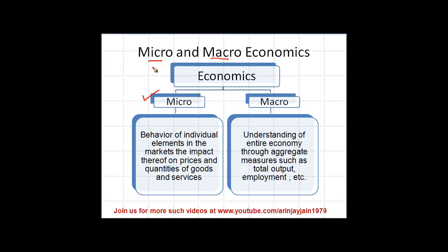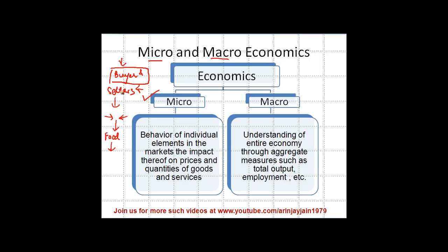Let's see first microeconomics. In a market there are buyers and sellers. When I study each individual buyer and seller and how they are interacting with each other, and how that is going to affect a particular commodity — say food — I am studying the interaction of various buyers and various sellers and how their interaction is impacting the price of this food. This is something which is covered in microeconomics. So I am looking at a smaller picture from the perspective of food grains in an economy.